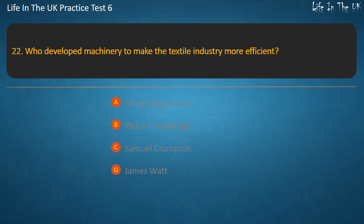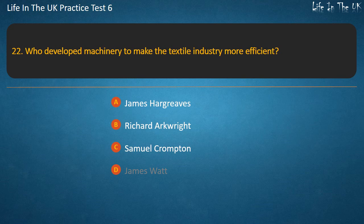Question 22. Who developed machinery to make the textile industry more efficient? Options: James Hargreaves, Richard Arkwright, Samuel Crompton, James Watt. Answer: Richard Arkwright.